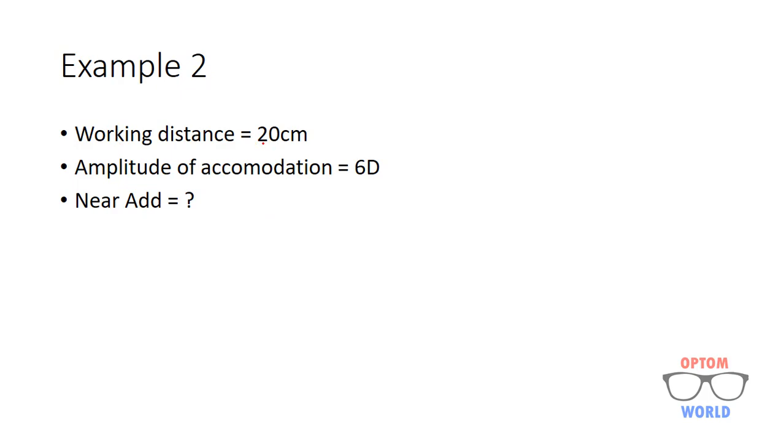Let's solve another example. Here, the working distance is 20 cm. 20 cm in diopters will be 100 by 20, which will be 5 diopters, and here the amplitude of accommodation is 6 diopters.